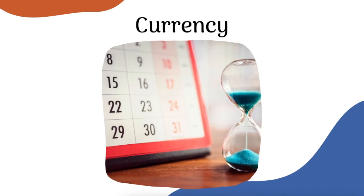First up is C for currency. Currency is how current something is, or when it was written. Most sources will have a publication date — newspaper articles and most website posts will have a timestamp, usually near the top, with the day and year they were published. Magazines will have a month and year on the front of the issue, and books will have a publication year on the copyright page. The tricky thing about currency is that no one can tell you how old is too old — it depends on your topic. If you're writing about global warming, using data from 1998 is not going to be current enough. If you're writing about interpretations of Shakespeare, however, an article from 1998 might be just fine. The CRAAP test can't tell you if your article is recent enough, but the C reminds you to look and consider it.